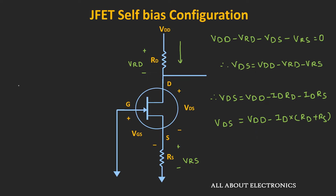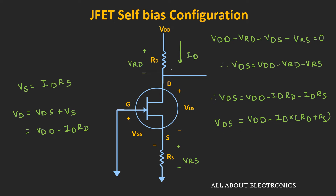The source voltage VS equals ID·RS, and the drain voltage VD equals VDS plus VS, since VDS = VD − VS. From this, VD equals VDD minus ID·RD. In this way, we can find VDS and the drain current ID for the self-biased configuration.